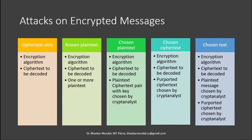The next type of attack is known plaintext attacks. Here the encryption algorithm is known, the ciphertext to be decoded is known, and additionally the attacker has one or more plaintext-ciphertext pairs. The attacker has both plaintext and ciphertext, which makes it somewhat easier to find the key compared to ciphertext-only attacks.